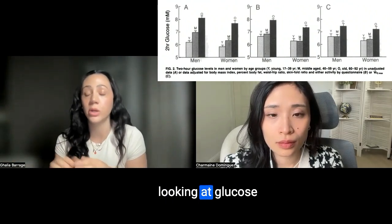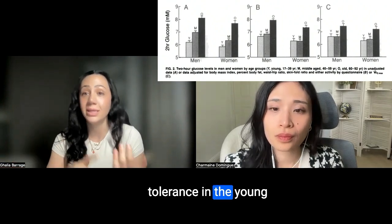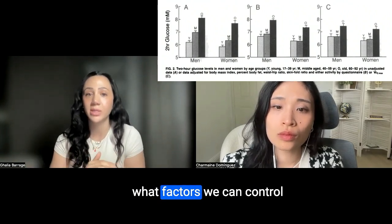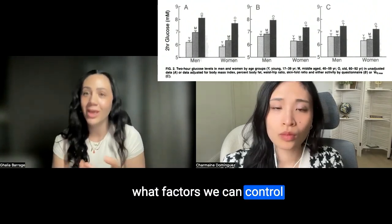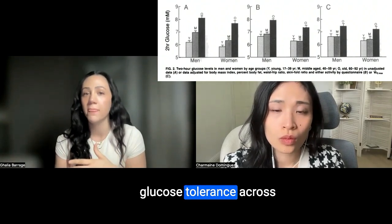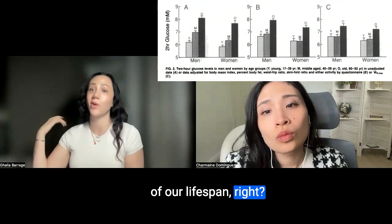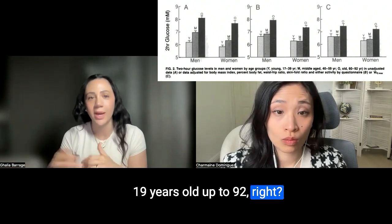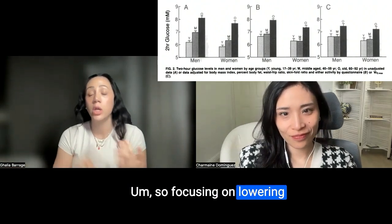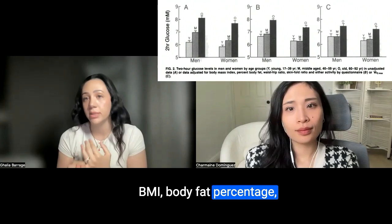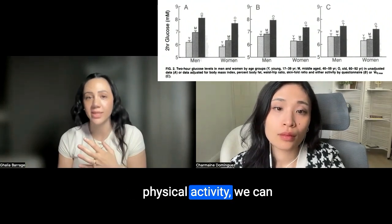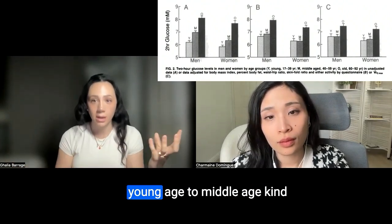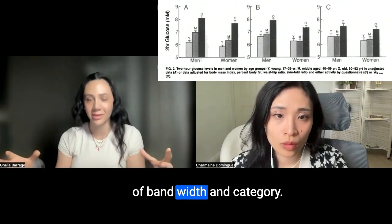This shows us that age is a significant factor when examining glucose tolerance in older adults, but not as much when looking at glucose tolerance in the young and middle-aged group. This is important because it allows us to focus on what factors we can control when it comes to mediating glucose tolerance across this large proportion of our lifespan — from 19 years old up to 92. So focusing on lowering BMI, body fat percentage, waist hip ratio, and increasing physical activity, we can actually work to improve our glucose tolerance in the young to middle age range.